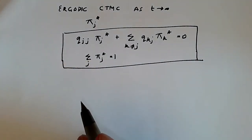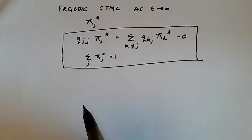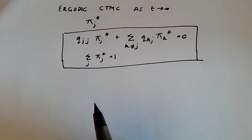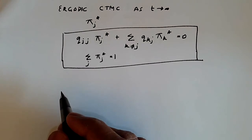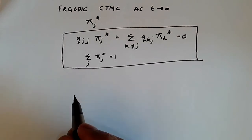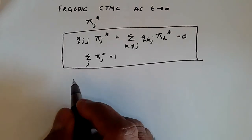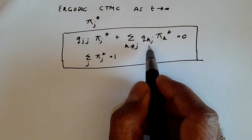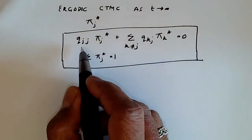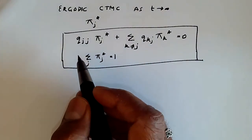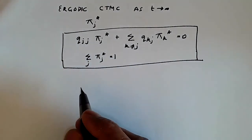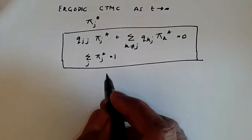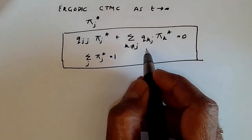I'm going to state without proof that a birth-death process is an ergodic continuous time Markov chain — it does satisfy the conditions. So what we can do is substitute in the values for q_kj and q_jj from the birth-death process to obtain the balance equations.